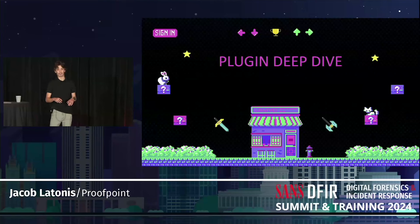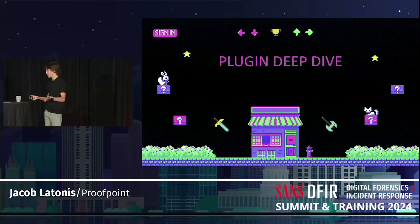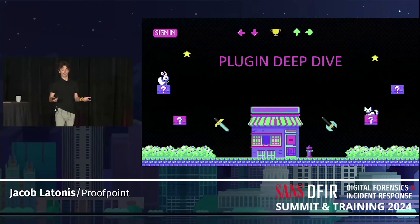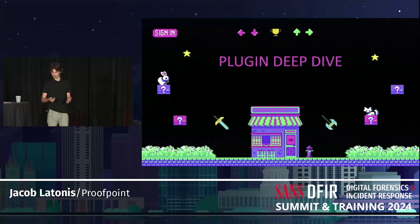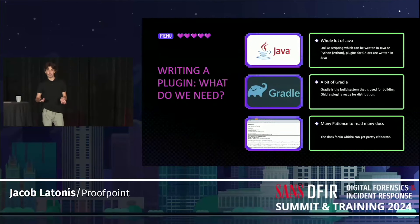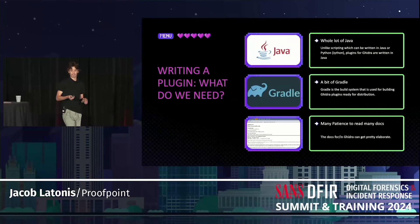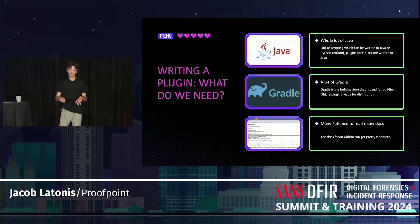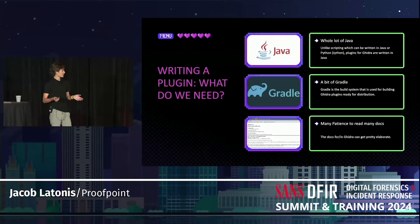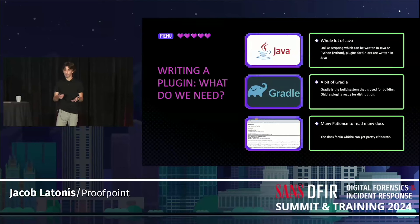Now the fun part — we're actually going to talk about the plugin and how it can be used. The main point I want to drive home: just because this is about the Game Boy, it doesn't have to be. If you have any manual workflow you do every time you reverse engineer, odds are it can be automated with Ghidra's flat API. To write a plugin, you need a whole lot of Java, a bit of Gradle, and a lot of patience to read docs. Java docs are awful — really hard to read, they look really old, and navigation is a pain — but it's a good skill to have.